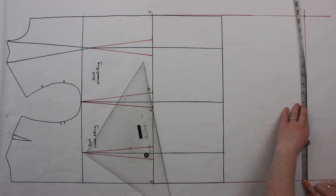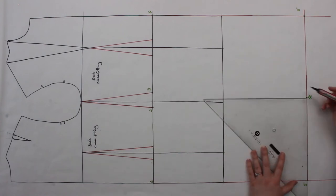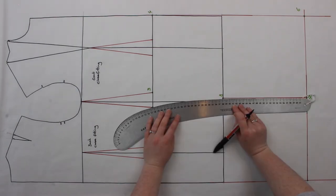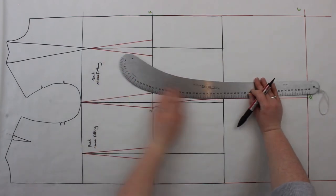Midway between 5 and 6, you're going to mark in 7 and then square up to number 8. Join points 3 and 8 and then points 2 and 8 with a curved ruler.